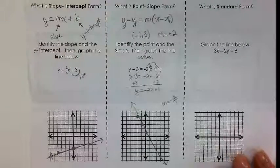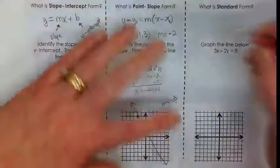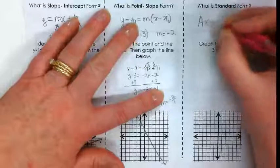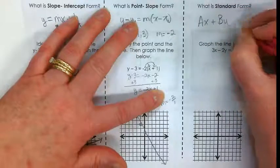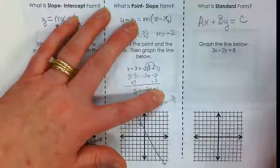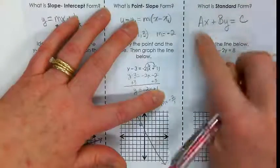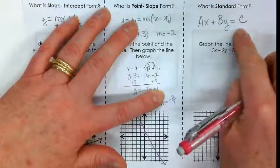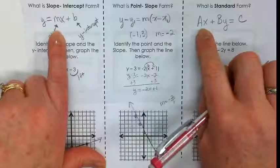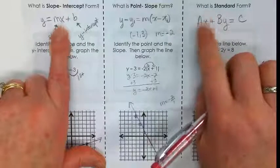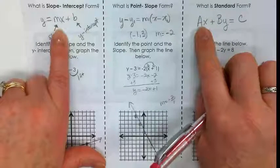And then finally, this is a review of standard form. We did this. It is ax plus what? by equals c. Not b equals y. by equals c. The a and the b and the c are all integers. This term is the same as this written in a different form.